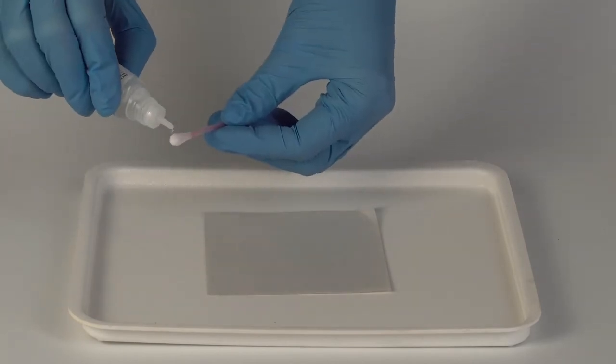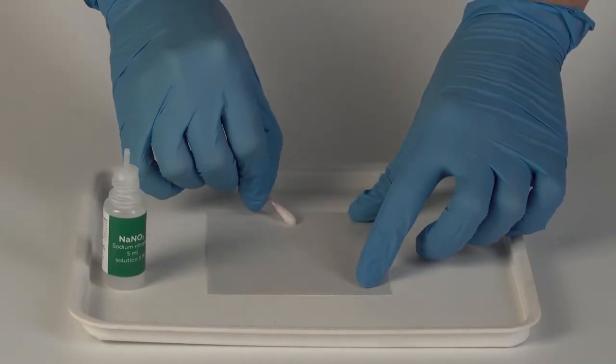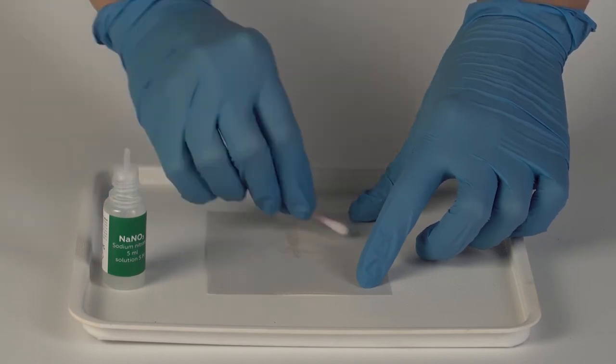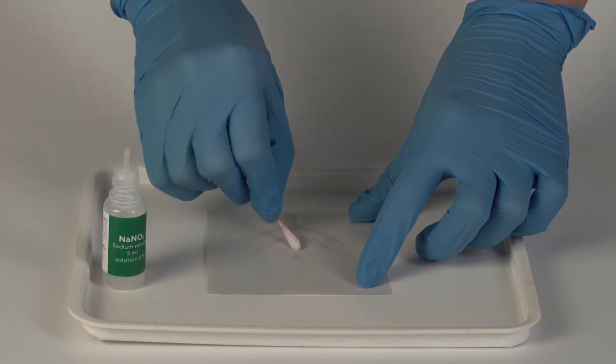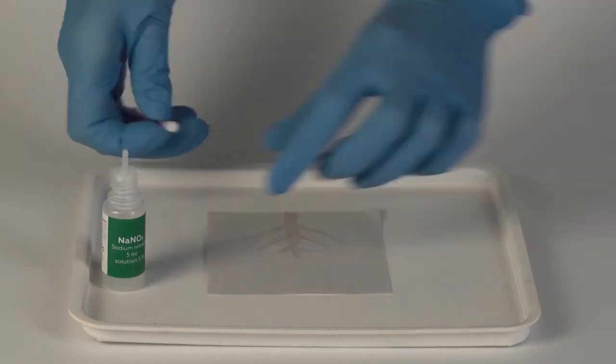Thoroughly wet a cotton swab with the sodium nitrate solution and paint a pattern on the paper. For best results, start painting from the edge of the paper, making a thick continuous line. Make sure the solution thoroughly wets the paper.